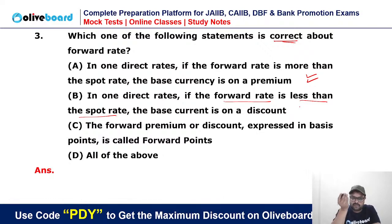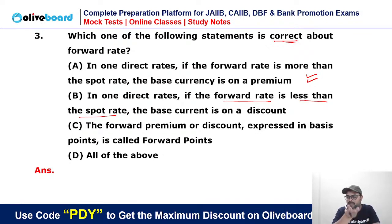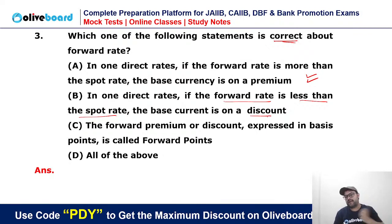It is on premium. So in the market, the spot value and the forward value are compared. If the forward value is higher than the spot value, it means premium. If the currency's future demand is low, it means discount.